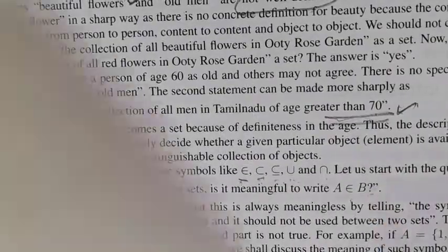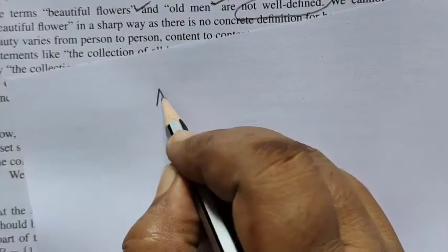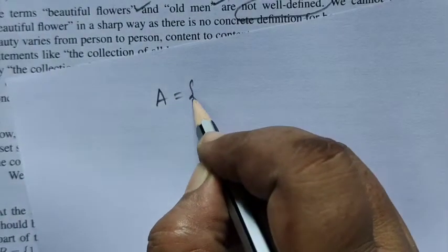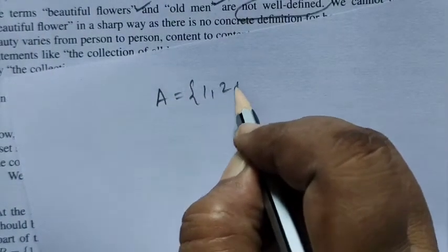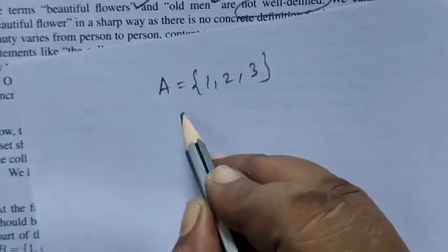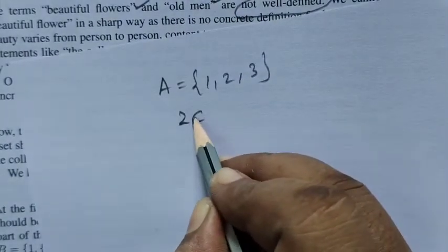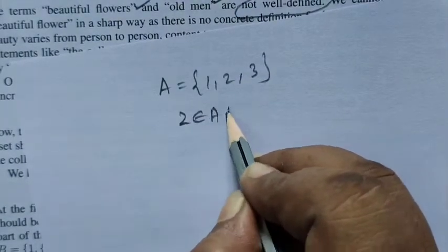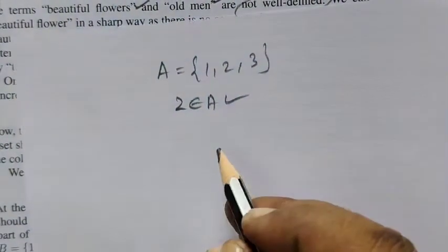We use the element symbol with elements, not sets. Suppose the set A is {1, 2, 3}. Then writing '2 belongs to A' (2 ∈ A) is correct, because 2 is an element of A.